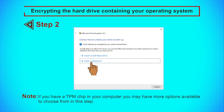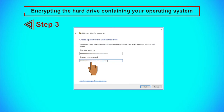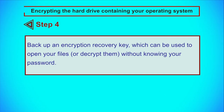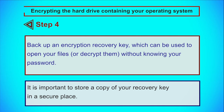For example, when you use a USB flash drive option, you can limit access to your information to people who have two factors of authentication: they have the specific USB drive and know the password to log in to your account. Step 3: Enter a strong password for BitLocker encryption. If you use multiple languages and encounter password errors in following steps, try using the English language input method. Step 4: In this step, you can back up an encryption recovery key, which can be used to open or decrypt your files without knowing your password. It is important to store a copy of your recovery key in a secure place. Note that saving your recovery key to your Microsoft account may compromise the security of the key, but it offers advantages in case of losing backup key files.